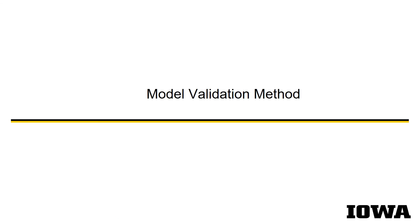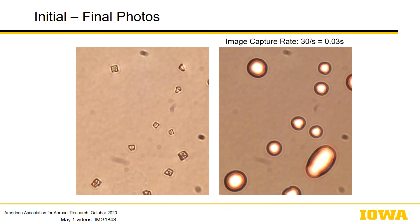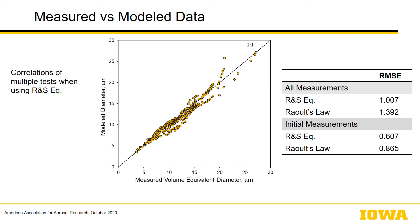For validating the growth phase, we used a relatively simple apparatus that injected a known relative humidity onto a cover slip with salt particles attached to it, using an inverted microscope and a cell phone video capture technique to measure particle growth over time. You can see the initial salt particles relative to their growing droplets. From this, we produced measured versus modeled data and computed the root mean squared error for both the polynomial and Raoult's Law.